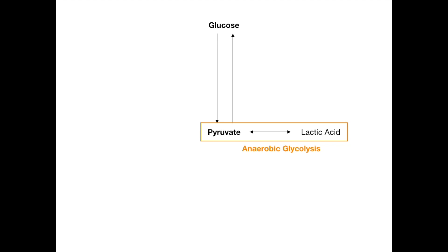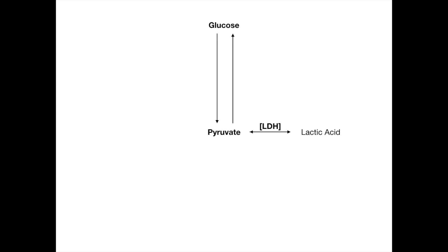The enzyme that does this reaction is called lactate dehydrogenase, or LDH for short. LDH is active in low oxygen states. Clinically, low oxygen states occur in things like infection, hypoxia, ischemia, and heart failure. When you go into the hospital, you will not be surprised to learn that in these states we obtain lactate levels from blood, because an elevated lactate tells us the patient does not have adequate oxygenation.